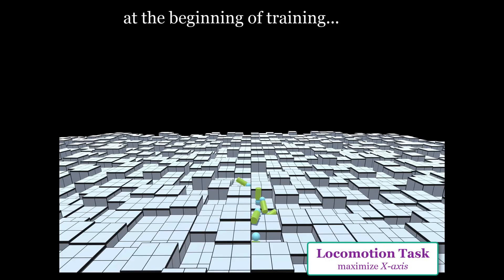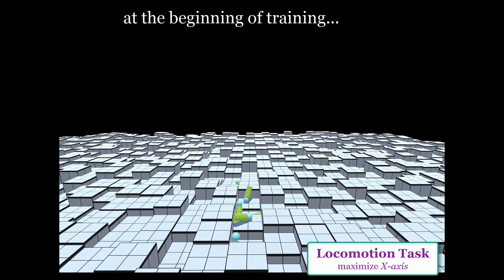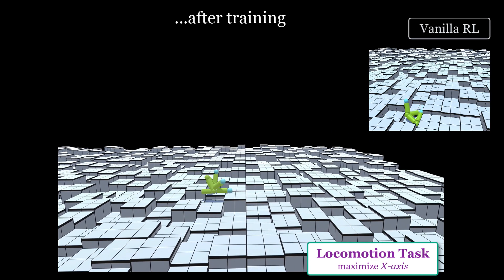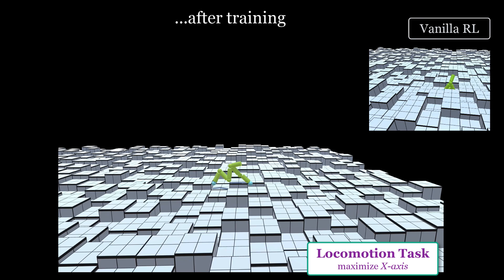We now apply the same idea to the task of locomotion, where the goal is to move to the right. Again, at the beginning of training, the limbs don't move much, but once trained, they self-assemble into an agent that can move to the right.